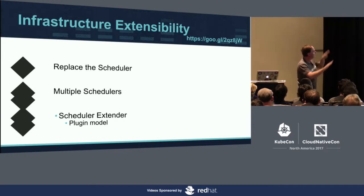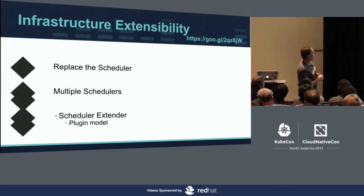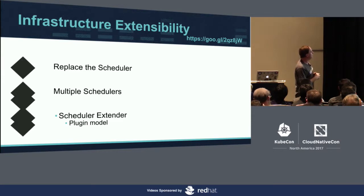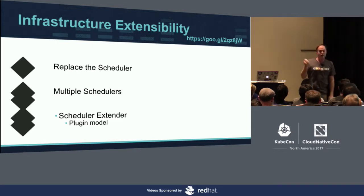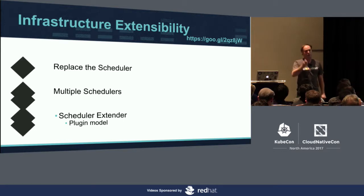This one scares me the most — it's a double black diamond run for me — and that is replacing the scheduler. You can replace the scheduler with your own scheduler, but I think that'll break your cluster personally. I would talk to the SIG — they're doing a lot of refactoring. Think twice before doing that. The easiest option is the scheduler extender, where you can add your own prioritization. So if you want to always prefer certain machines — say rack 23 — you can put in a plugin that says always prefer to put the stuff on those machines if it fits.